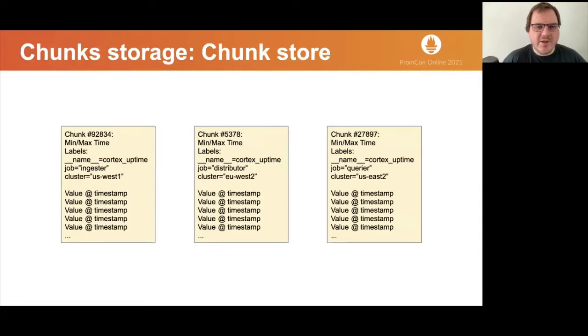Original storage in Cortex is called chunks storage. It has two parts, index and store for chunks. On this slide, we see example of three chunks. Each chunk contains samples for one time series for a specific time range, typically a few hours. In addition to those samples, Cortex chunk has some metadata about itself, like what series it belongs to stored as a set of labels or minimum and maximum time.